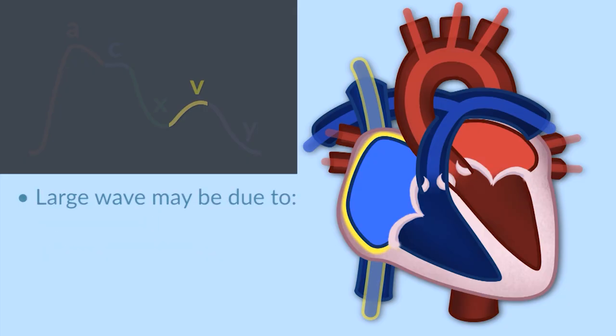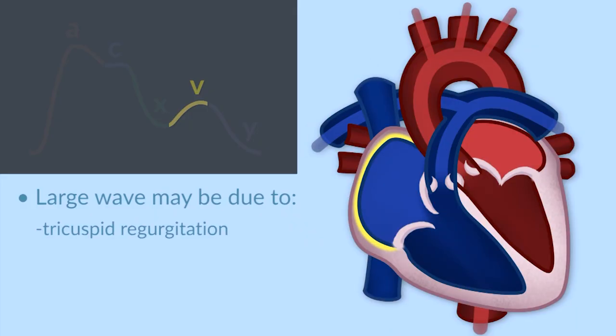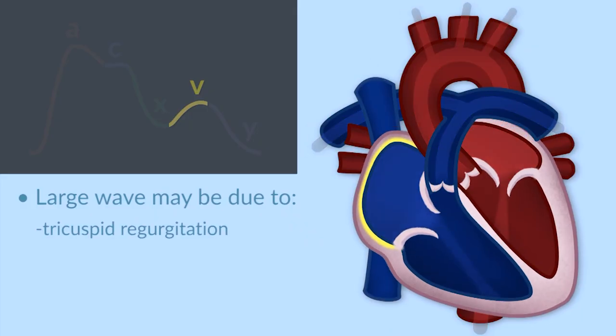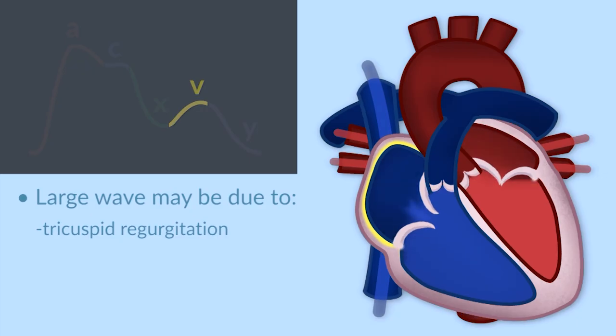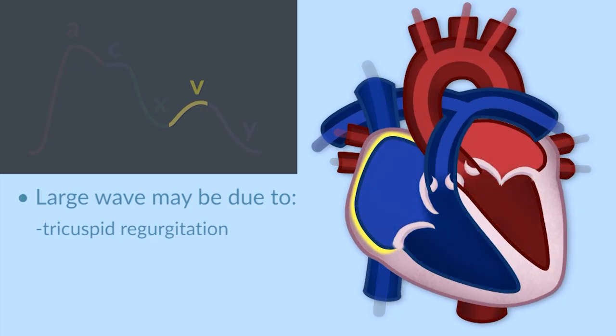So a very large V wave can in fact be due to the presence of tricuspid regurgitation because there's actually regurgitation of blood into the right atrium during systole, and that's what augments the V wave. But it also could be due to an instance where there's a lot of volume coming into the right atrium during ventricular systole in a circumstance where the atrium isn't very compliant.